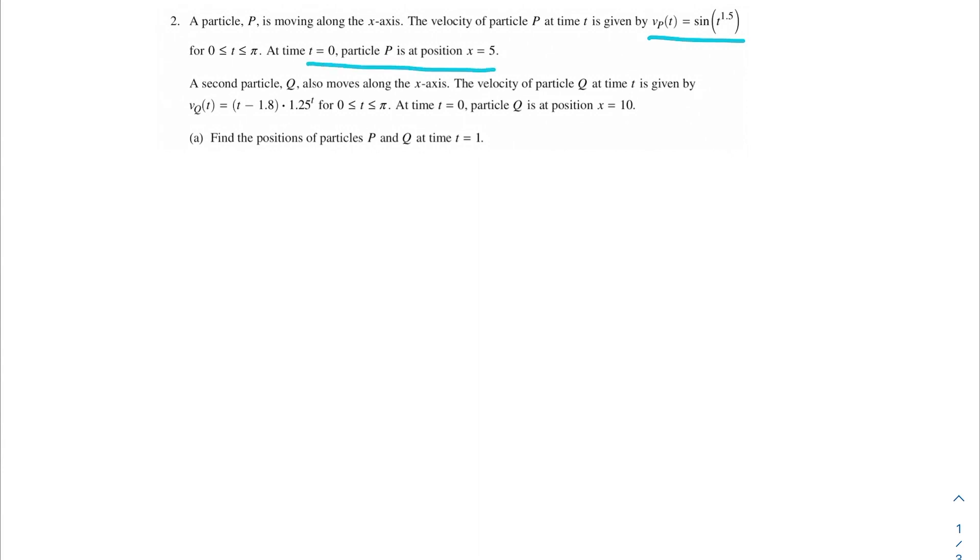A second particle Q also moves along the x-axis. The velocity of particle Q at time t is given by this, also between 0 and pi. At time t equals 0, particle Q is at position x equals 10. Find the positions of particles P and Q at time t equals 1.